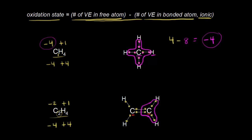Carbon normally has four valence electrons. Using our formula, the oxidation state equals the number of valence electrons carbon is supposed to have minus the number around carbon in our drawing after accounting for electronegativity. That gives us one, two, three, four, five, six — so four minus six gives an oxidation state of minus two, in agreement with our prediction. The carbon on the left yields the same calculation: four minus six equals minus two.